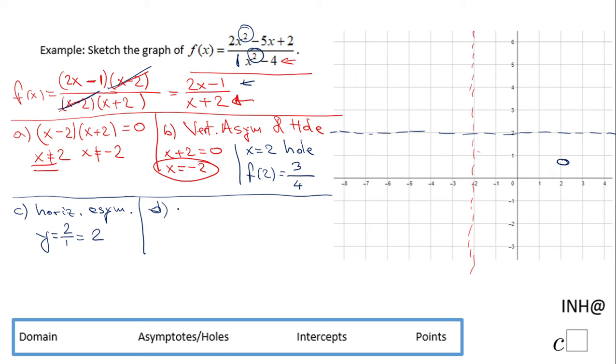I'm gonna find the y-intercept. The y-intercept happens when x is 0. So f of 0, for our original function, if you plug 0 in here...